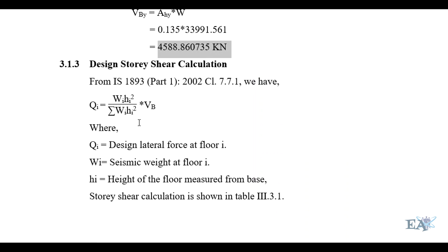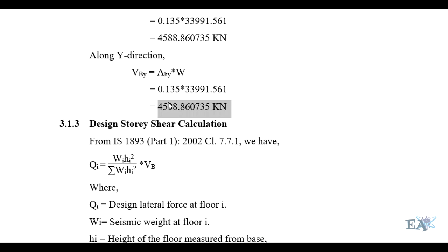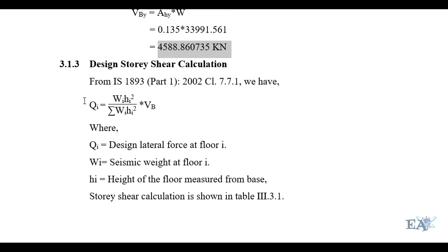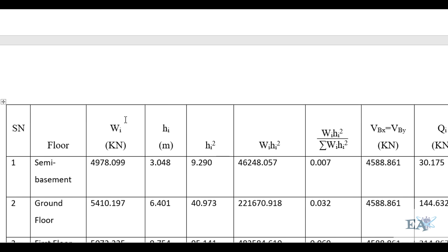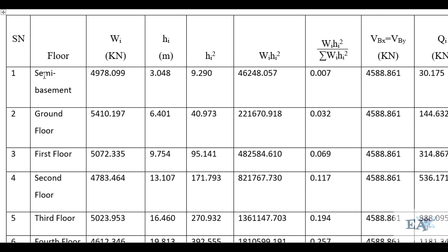After calculating the base shear, we distribute the entire lateral force over each story. The story shear at floor i is given by: Qi = (Wi × Hi²) / Σ(Wi × Hi²) × VB, where Wi is the seismic weight of the i-th floor, Hi is the height of that floor from the base, and VB is the total base shear.